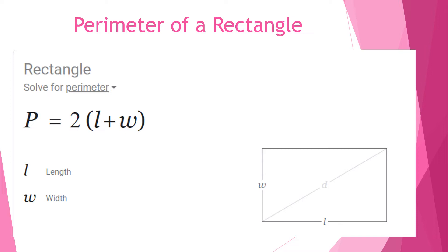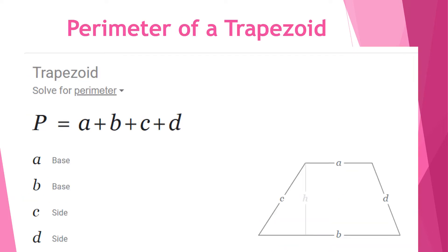To find the perimeter of a rectangle we have the following formula: P equals 2 times (length plus width), where L represents the length and W represents the width. In the illustration, W is on the short side which is the width, and L is on the longest side.